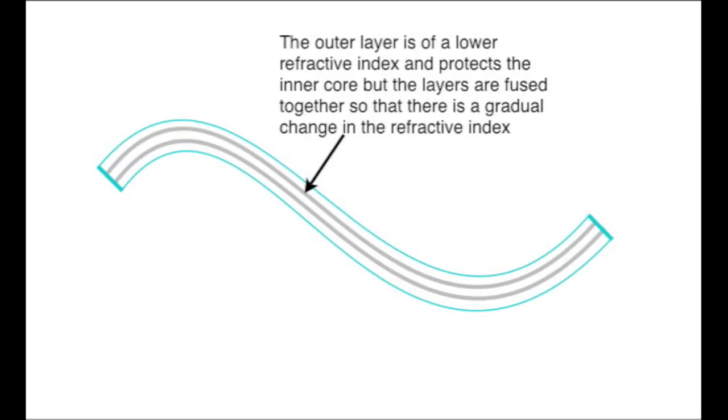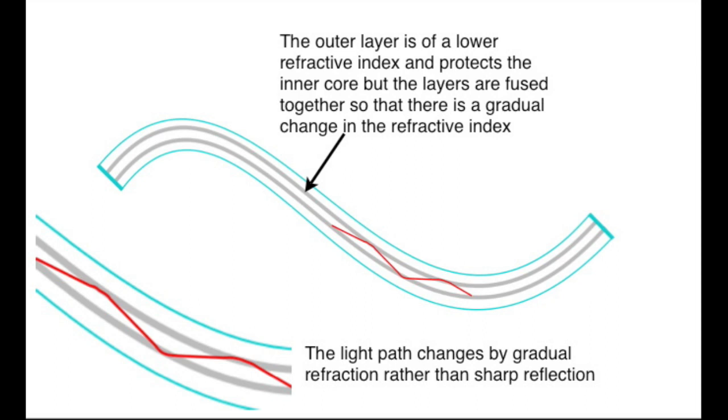In some commercial fibres, the outer layer and the inner core are fused together, so that there is a gradual change in the refractive index. This causes a gradual change in the path due to refraction rather than a sharp reflection.